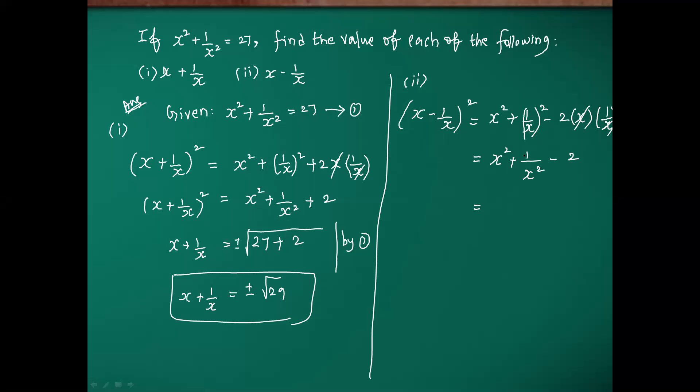We have x square plus 1 by x square. 1 square the value 1, x square the value x square minus 2. x square plus 1 by x square, we have 27. Here we have minus 2. 27 I am getting by answer number 1. After subtract, I am getting 25. The square goes to opposite, x minus 1 by x equals square root of 25.